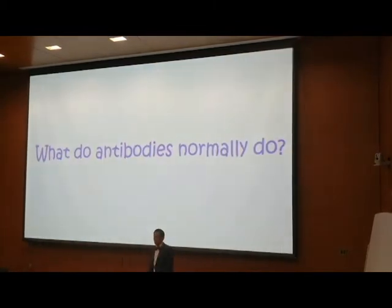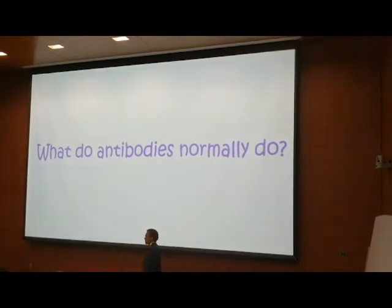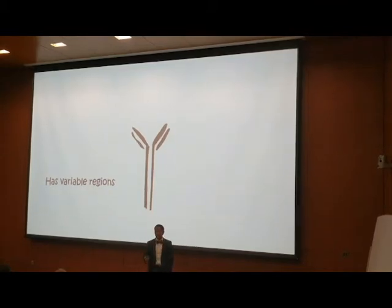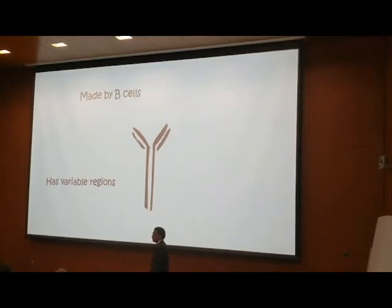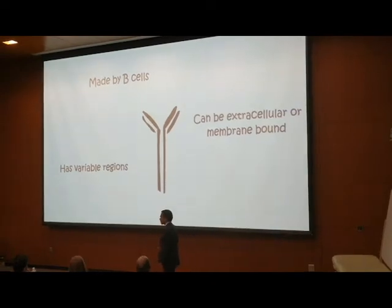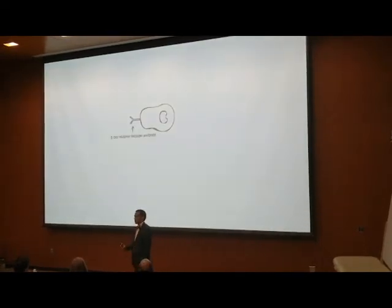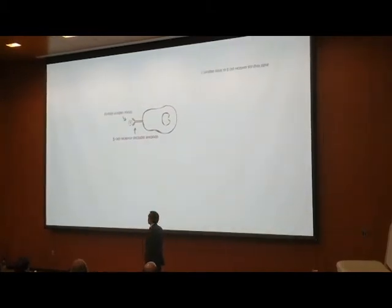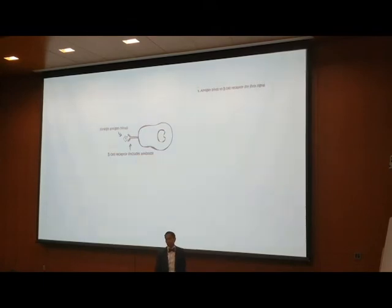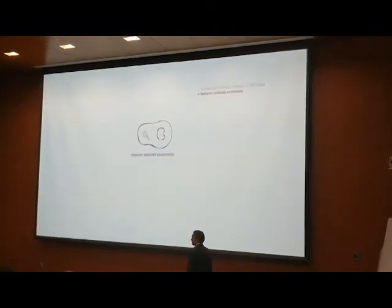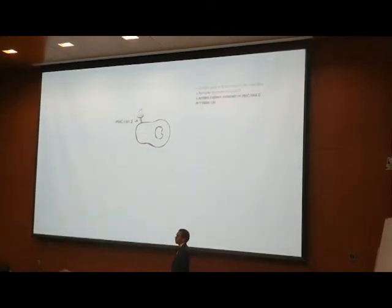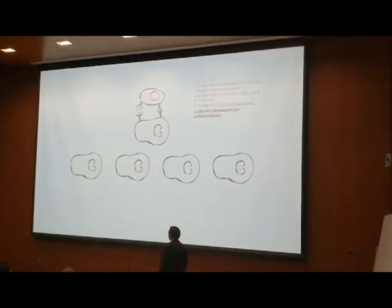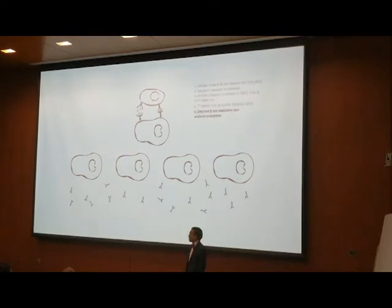Let's find out what antibodies normally do before we learn what goes wrong in antibody-dependent enhancement. This is the antibody — it has variable regions that are specific to an antigen. It's made by B cells, and it exists in secreted form or membrane-bound to the B cell as part of the B cell receptor complex. To activate the B cell, you need two signals: the first is the foreign antigen or virus attaching to the B cell receptor, which is then taken up by endocytosis and presented on MHC class 2, providing the second signal. Now this specific B cell can multiply and start producing antibodies.